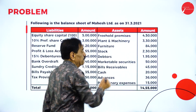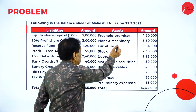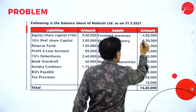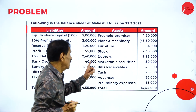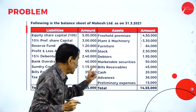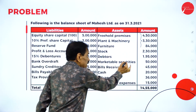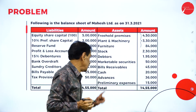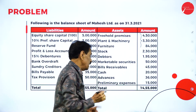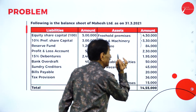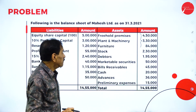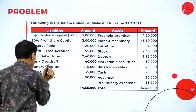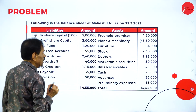Freehold premises, which is a building, is a fixed asset. Plant and machinery is a fixed asset. Furniture is a fixed asset. Stock, debtors, marketable securities, bills receivable, cash, and advances are all current assets. Preliminary expenses should not be taken as a current asset. Current liabilities include bank overdraft, trade creditors, bills payable, and taxation provision.